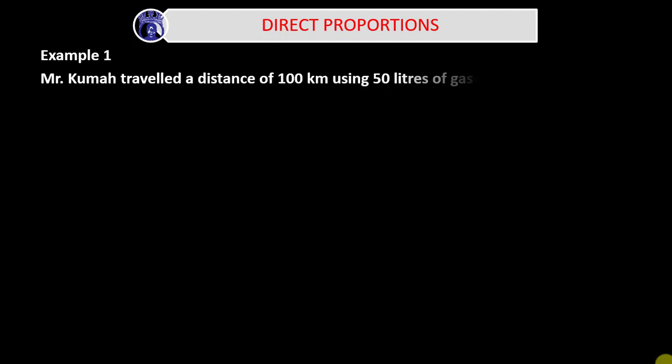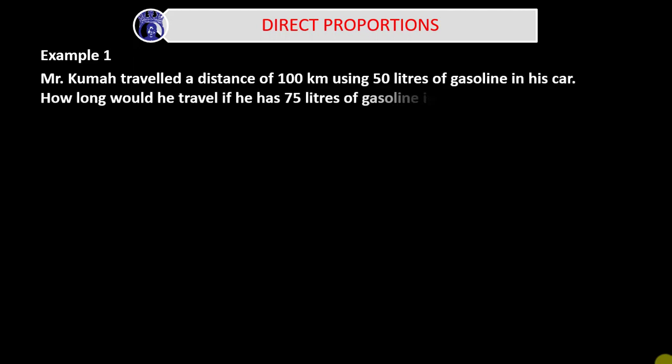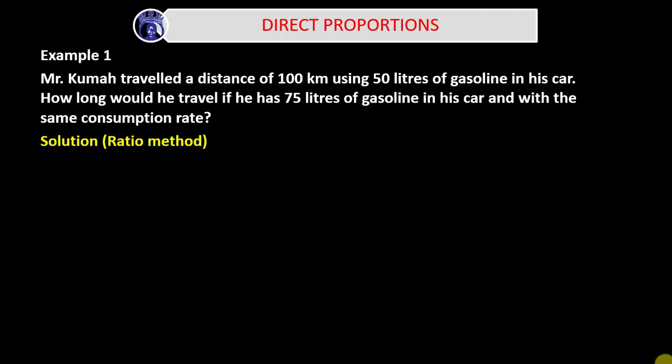Example 1: Mr. Kumar traveled a distance of 100 kilometers using 50 liters of gasoline in his car. How far would he travel if he has 75 liters of gasoline at the same consumption rate? Solution — let's use the ratio method first. 100 kilometers is equivalent to 50 liters, and X is equivalent to 75 liters, representing our unknown distance. We write both sides as an equality of ratios: 100 kilometers over X equals 50 liters over 75 liters.